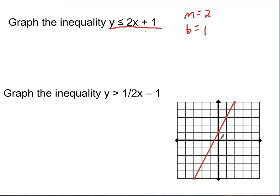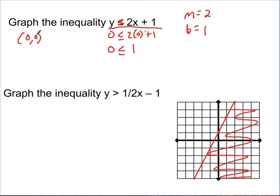The last thing we do when graphing an inequality is shade one direction or the other, because one side will be true and one side will be false. We can choose an ordered pair to substitute in and check. We always check (0, 0) if we can — and the line doesn't go through (0, 0), so we can. Putting 0 in for y and 0 in for x gives 0 ≤ 2(0) + 1, which is 0 ≤ 1. That's true, so we shade to that side. Also, when in slope-intercept form, a less than sign means we shade below the line.